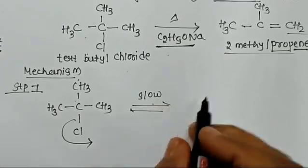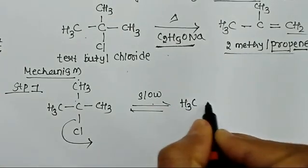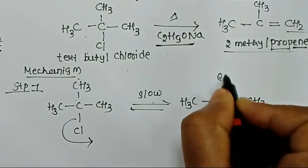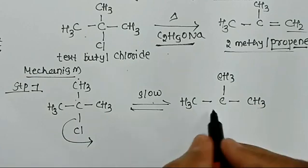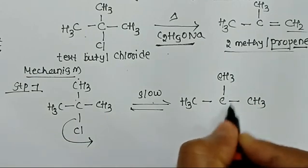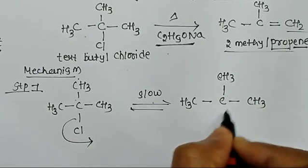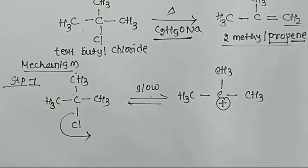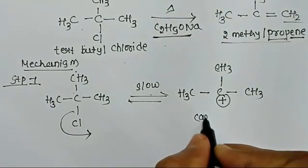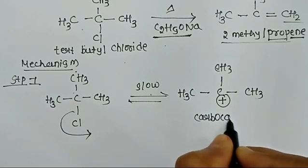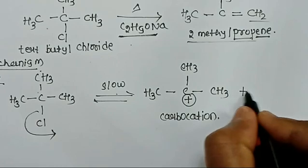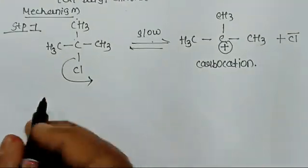With the elimination of Cl, the central carbon now has CH3, CH3, and CH3 groups. This carbon gets a deficiency of electrons, so it carries a positive charge — therefore it is known as the carbocation. The eliminated product is Cl-.